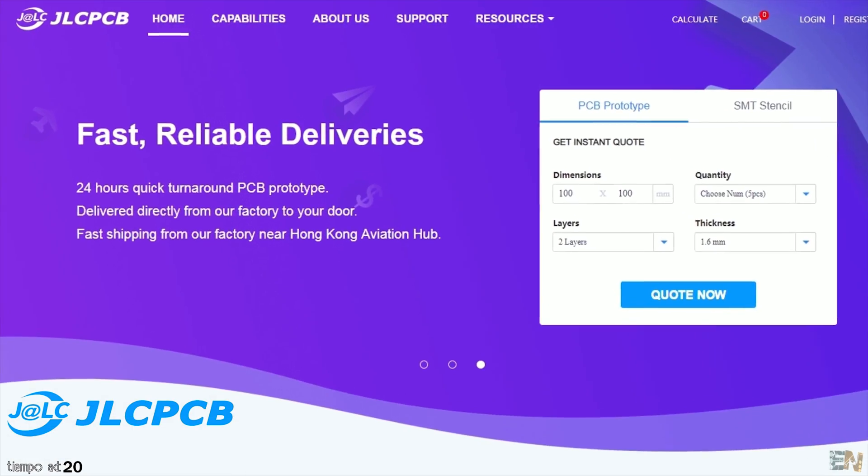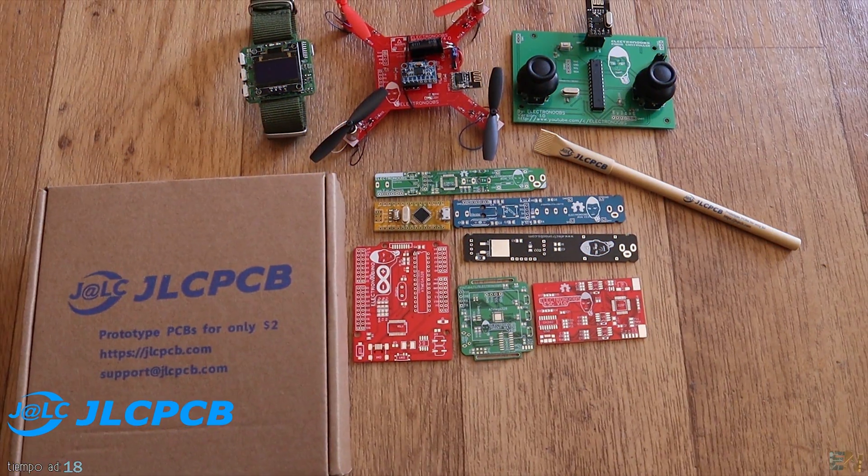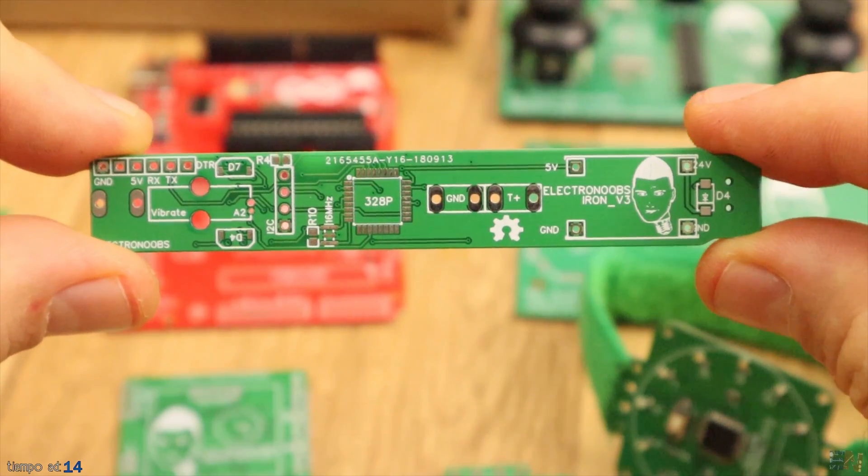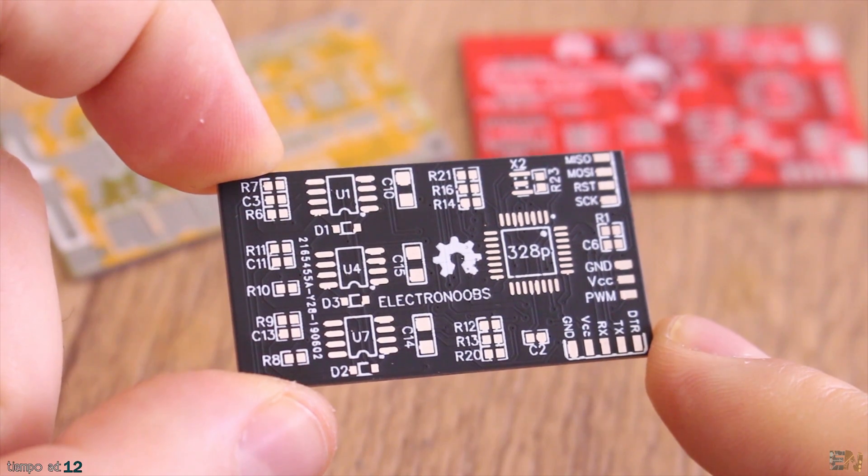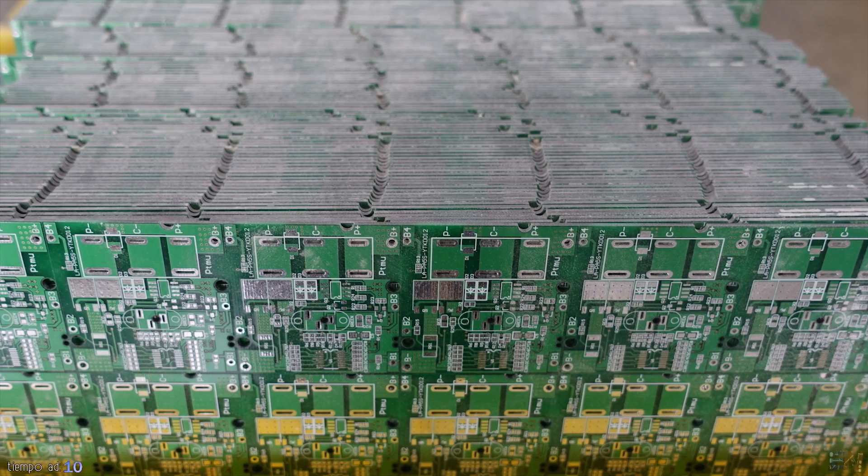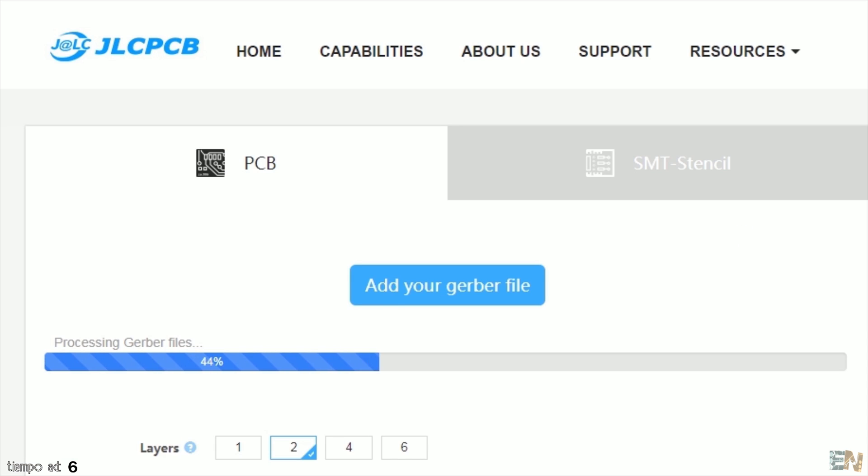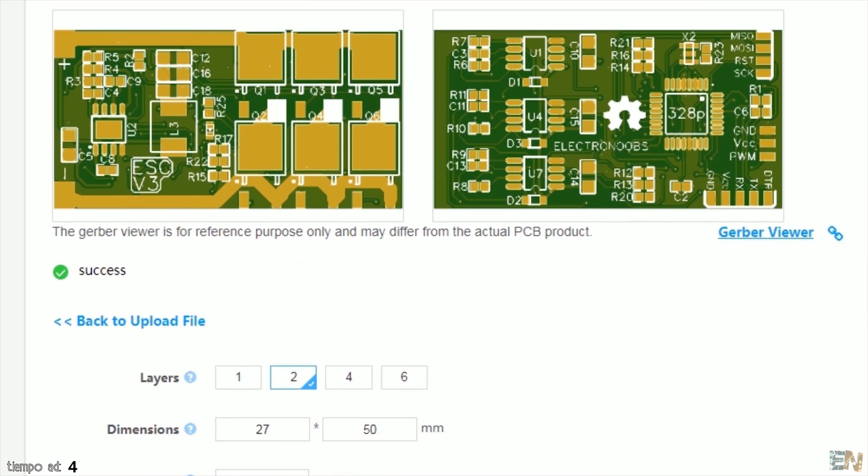The sponsor of this video is JLCPCB. Thanks to all users feedback, they are improving their services every day. Even if this is your first time, ordering PCBs is very easy. All you have to do is upload the Gerber files to JLCPCB.com, select the settings that you want, and you could get 5 PCBs of any color for only $2.